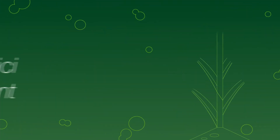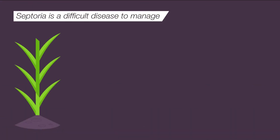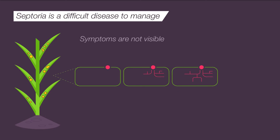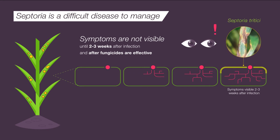So firstly, what is Septoria and why is it so challenging to manage? Septoria starts to develop when a fungal spore lands on the leaf. Then fungal hyphae start to grow inside the leaf. The fungal hyphae continue to grow inside the leaf without any visible symptoms until two to three weeks later when visible yellowy-brown lesions with black pycnidia appear on the leaf surface.